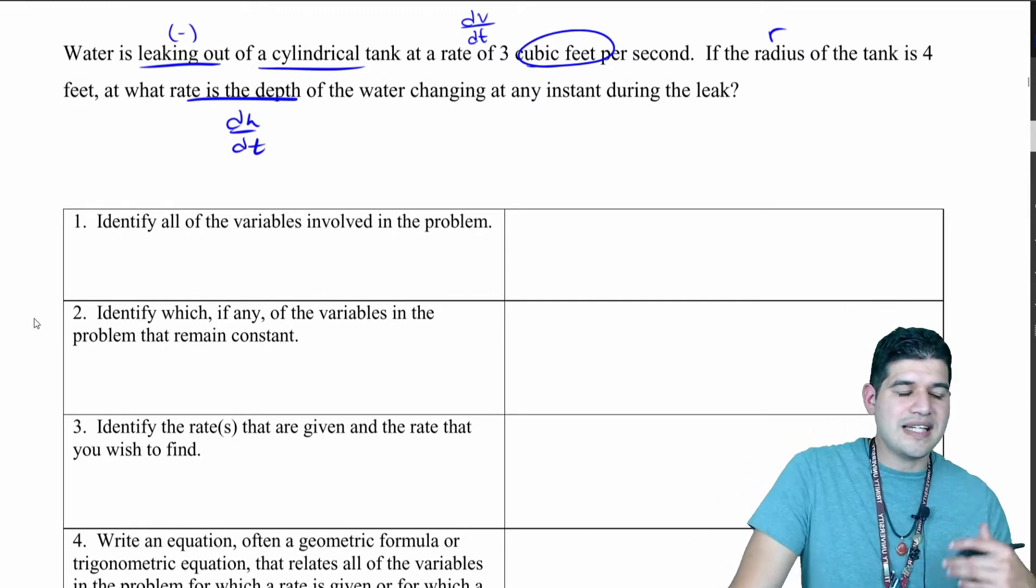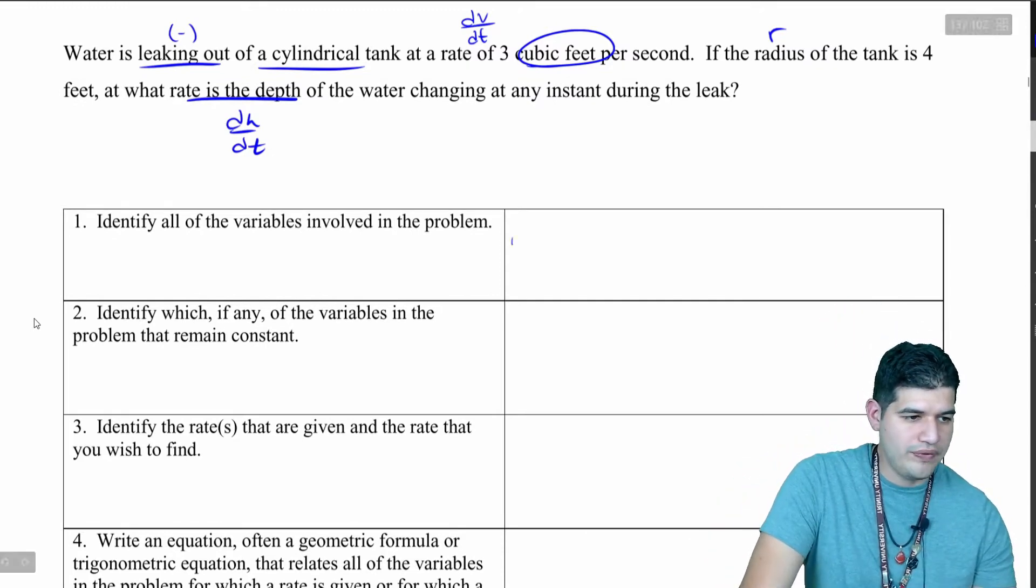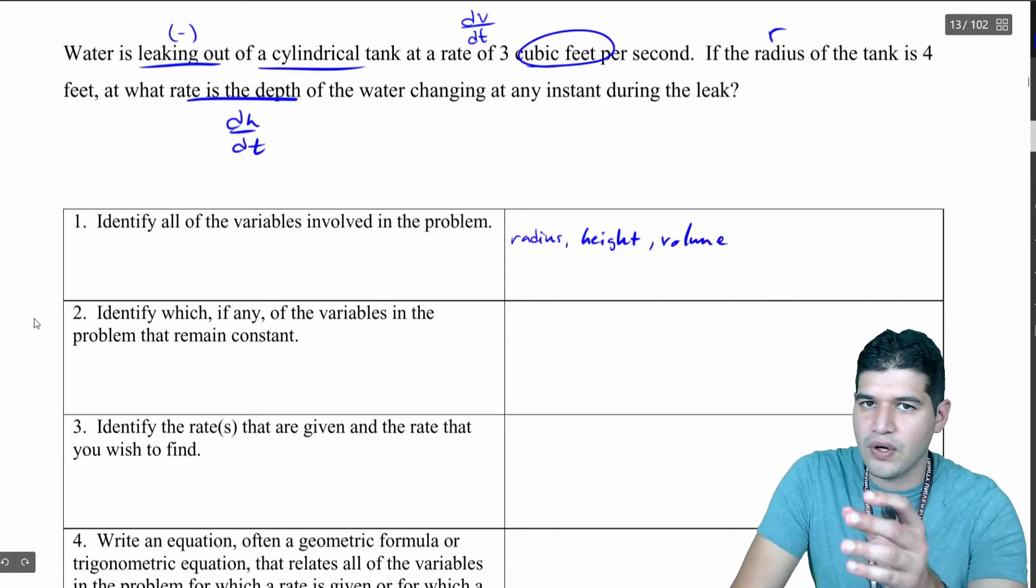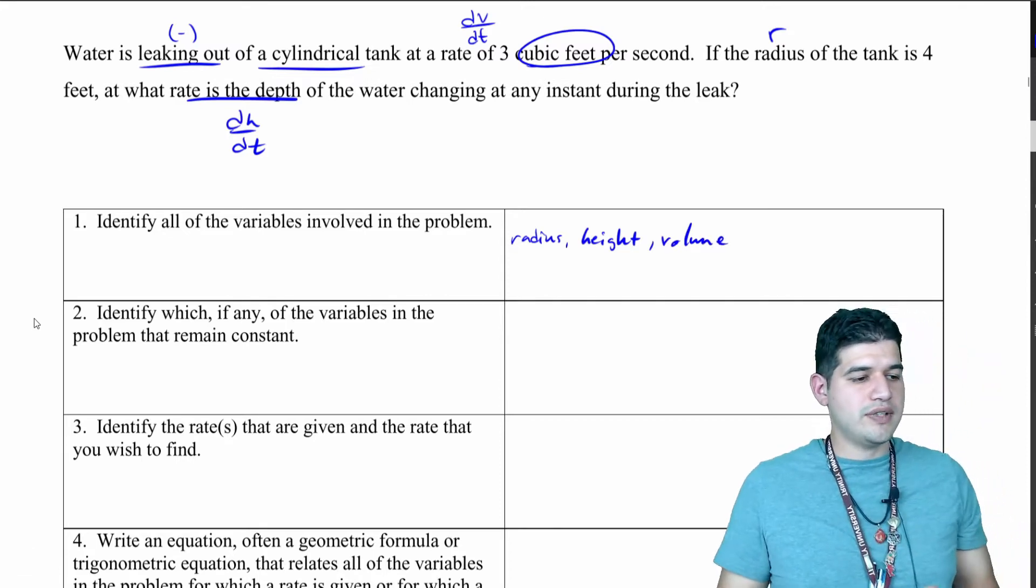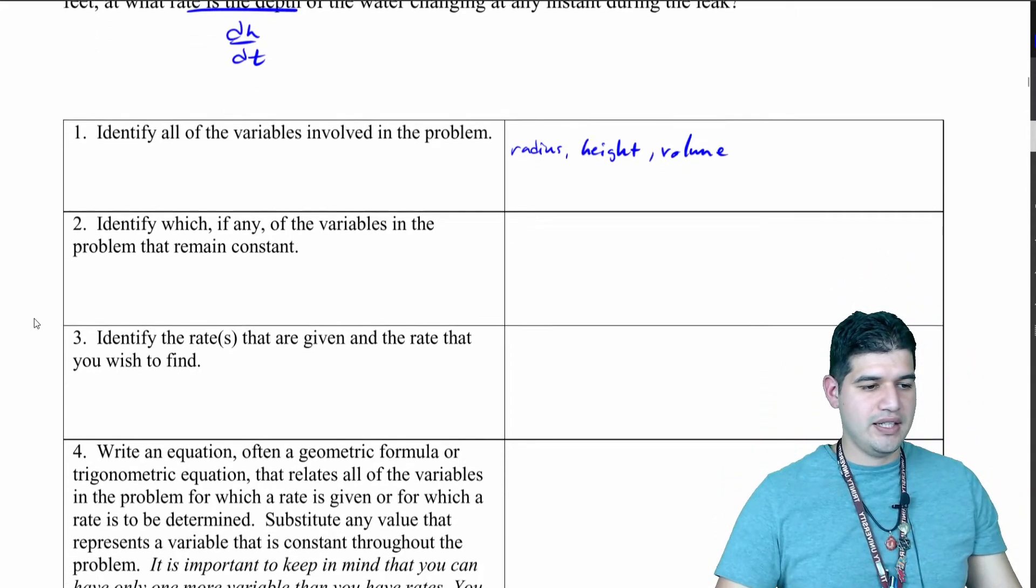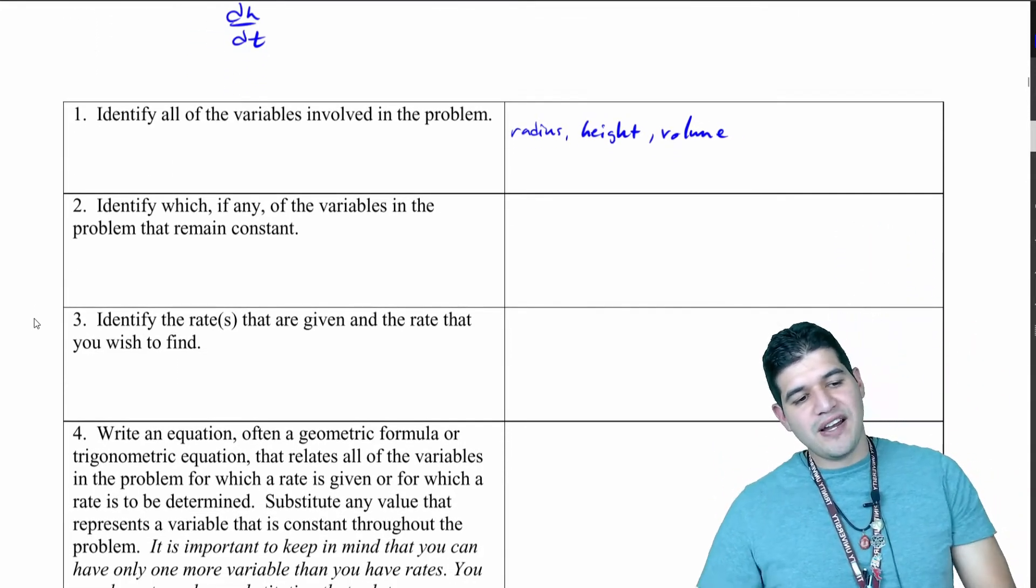What's everything that we have going on here? We've got radius, we've got height, and we are also looking at volume. That's going to be really helpful as we're looking at what is changing and what do we need to find.